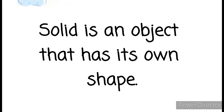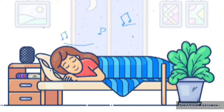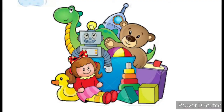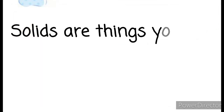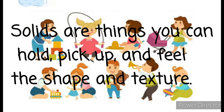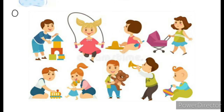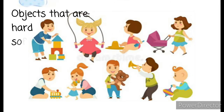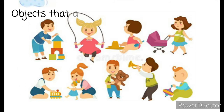Solid is an object that has its own shape, like a bed you sleep with, toys you love to play, and your school supplies. Solids are things you can hold, pick up, and feel the shape and texture. It may be hard, soft, smooth, or rough. It comes in all different sizes, from the biggest to smallest object.